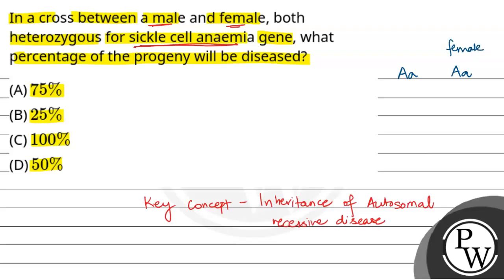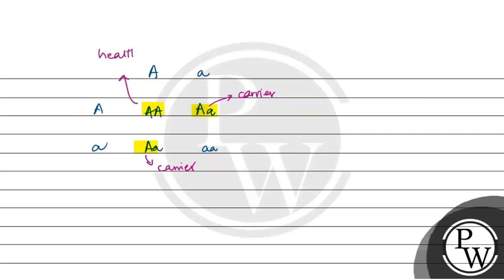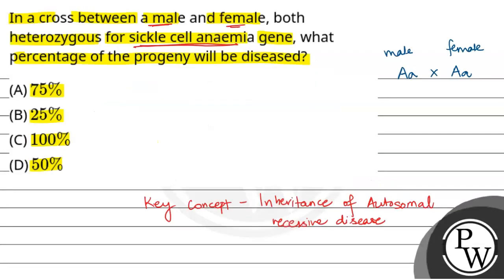This is the female and this is the male, and they both cross — both are heterozygous for sickle cell anemia. Since this is autosomal recessive, when we do the cross using a Punnett square with alleles A and a, the results show: one normal, two carriers, and one diseased. So one out of four is diseased, which is 1 divided by 4 multiplied by 100, equal to 25%.